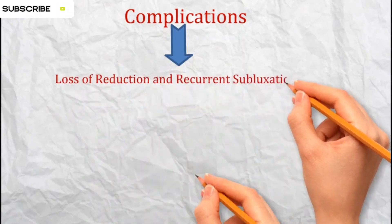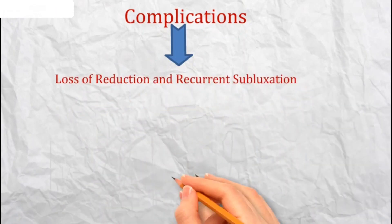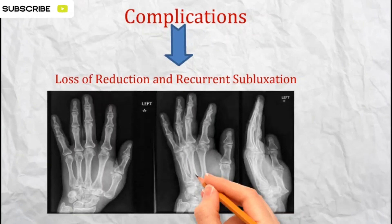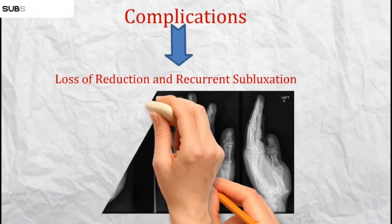Loss of reduction and recurrent subluxation: in some cases, the reduction may be lost, leading to recurrent subluxation and instability of the thumb.